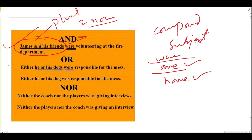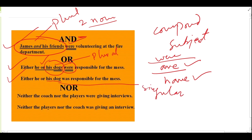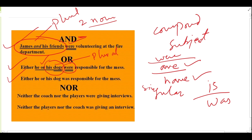Next is the use of or and nor — this is very important. For example: 'Either he or his dogs were responsible for the mess.' The rule is: focus on the subject after or — his dogs is plural, so we use the plural verb were. But 'either he or his dog was/is responsible' — his dog is singular, so we use was for the past or is for the present.